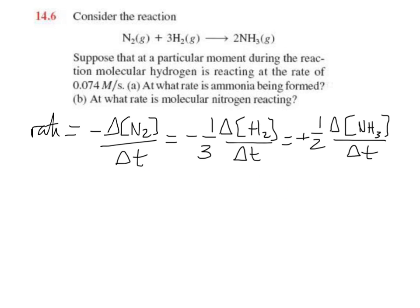In this problem we're told the rate at which hydrogen is being used up, so what we're saying is that the change in concentration of hydrogen with time - the 'used up' is a clue that that's a negative quantity - so it's negative 0.074, with units of molarity per second.